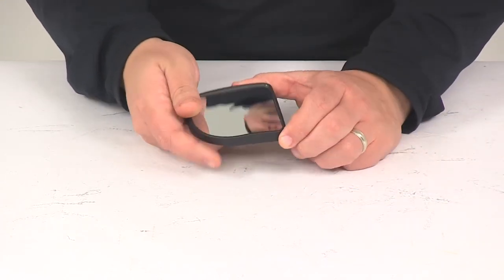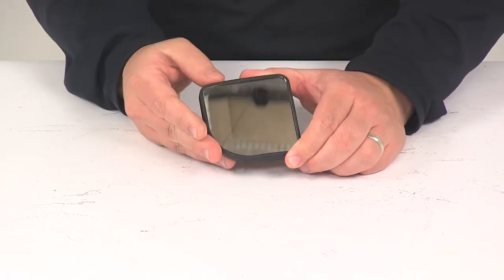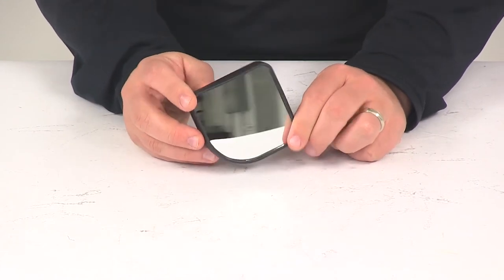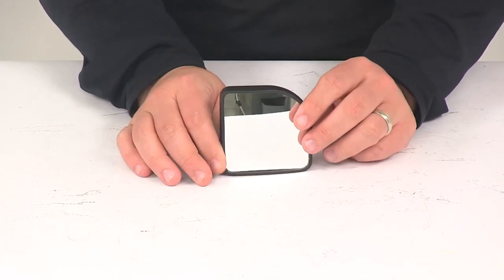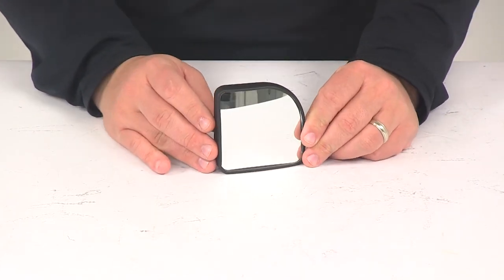You'll notice that the mirror has one corner that's curved. That's going to give you versatility when it comes to mounting this, so you can orient it the way that you want to best fit your particular mirror.